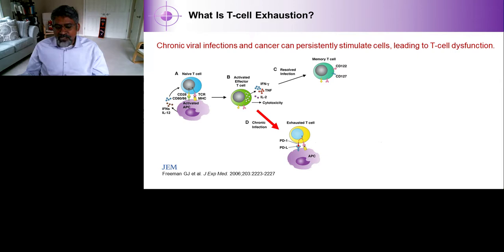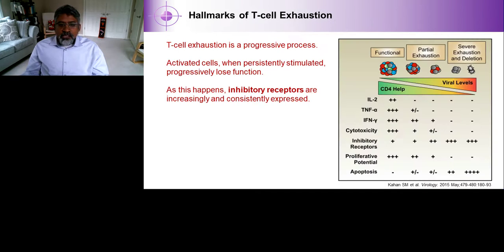However, with chronic infections or chronic stimulations, an exhausted T-cell emerges, and these exhausted T-cells often express inhibitory receptors like PD-1, and because of those, the interaction with antigen-presenting cells leads to a type of dysfunction or anergy. So what are the hallmarks of T-cell exhaustion?